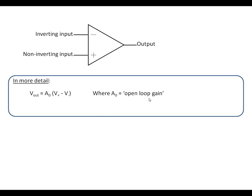And A₀ is called the open loop gain, so without any feedback in the system that's the voltage gain that we've got, and typically it's going to be about 100,000.